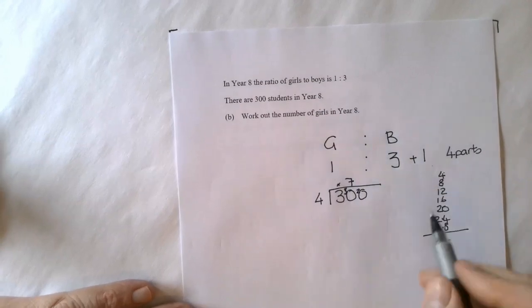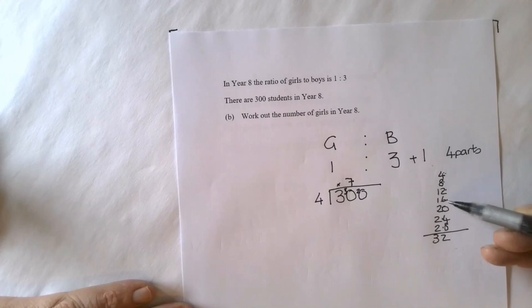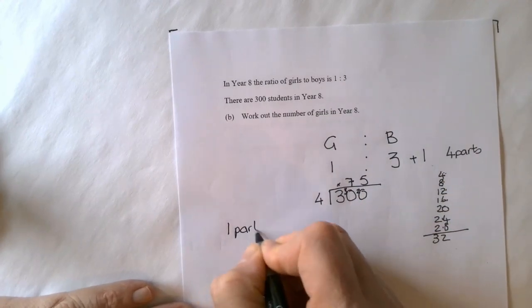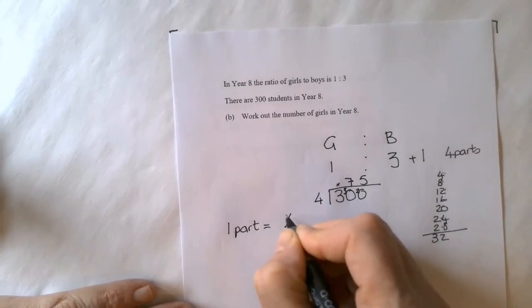Remain of 2. How many 4s in 20? If we've done this way it's easier if we've got 1, 2, 3, 4, 5. So 1 part equals 75 students.